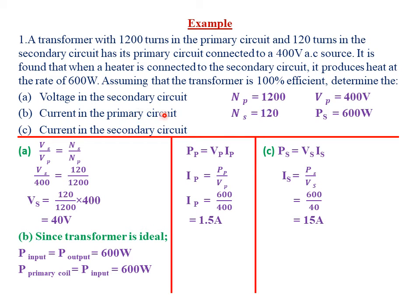For part B, we need the current in the primary circuit. Since no current value is given, we cannot use the turns rule directly. However, because the transformer is 100% efficient, the power in the primary coil equals the power in the secondary coil, which is 600 watts. Power input equals power output, so power in the primary coil is 600 watts.